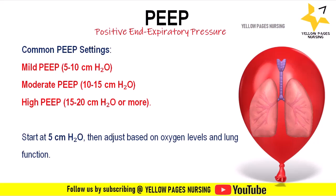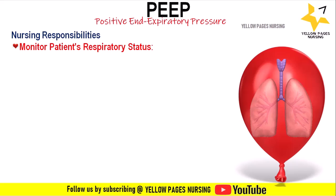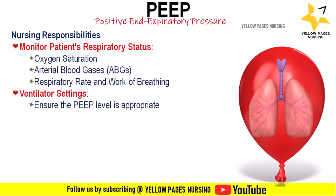Nursing responsibilities in PEEP management include: monitoring the patient's respiratory status and oxygen saturation using pulse oximetry continuously; performing arterial blood gas (ABG) analysis regularly to assess oxygenation and ventilation effectiveness; monitoring respiratory rate and signs of respiratory distress; and ensuring ventilator settings such as PEEP level (usually 5–15 cmH₂O, higher in ARDS), tidal volume, and FiO₂ are appropriate and adjusted to the patient's condition.